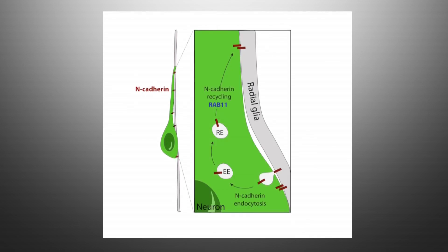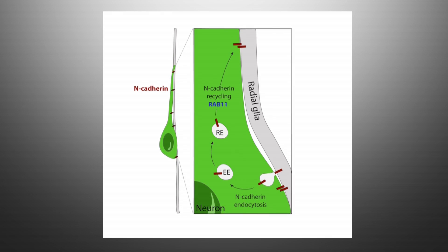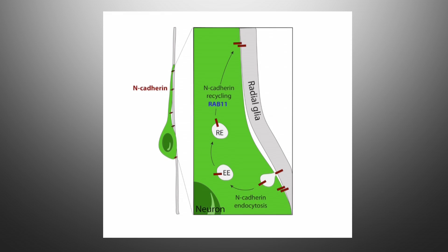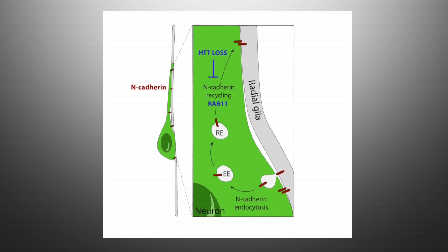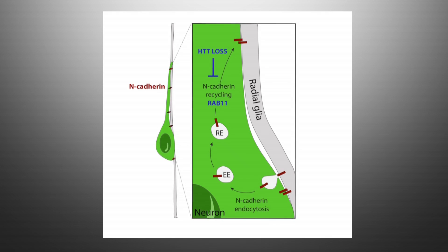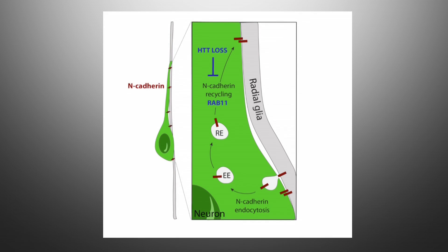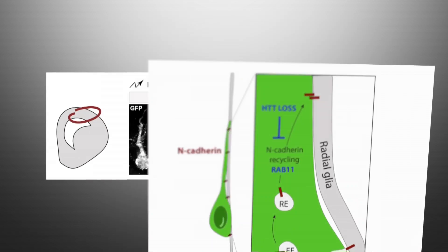This involves the GTPase Rab-11 mediating the membrane recycling of N-cadherin in migrating neurons. As Huntington regulates Rab-11 recycling activity, we hypothesized that Huntington may affect neuronal polarization through the Rab-11-mediated trafficking of N-cadherin.